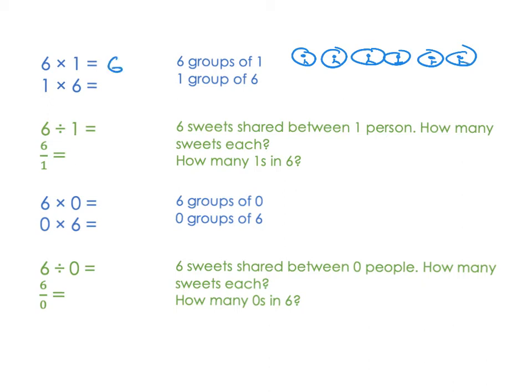1 times 6, we expect to get the same answer because we know 6 times 1 and 1 times 6 are the same. 1 times 6 would mean we've just got one group. And in that one group, there are 6 people. Well, how many people are there in total? 6. Simple as anything.